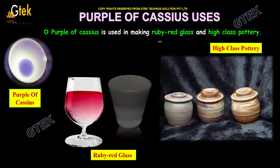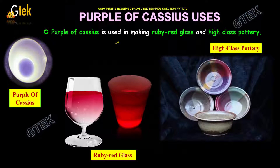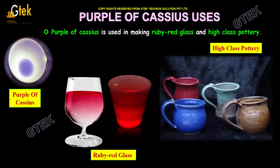The Purple of Cassius is used in making ruby red glasses and high-class portraits.